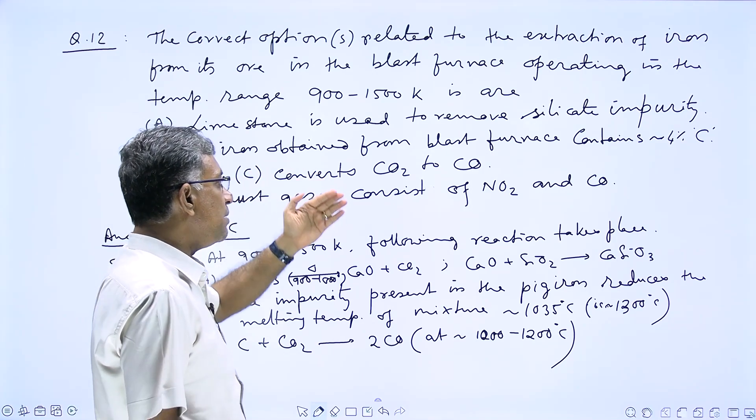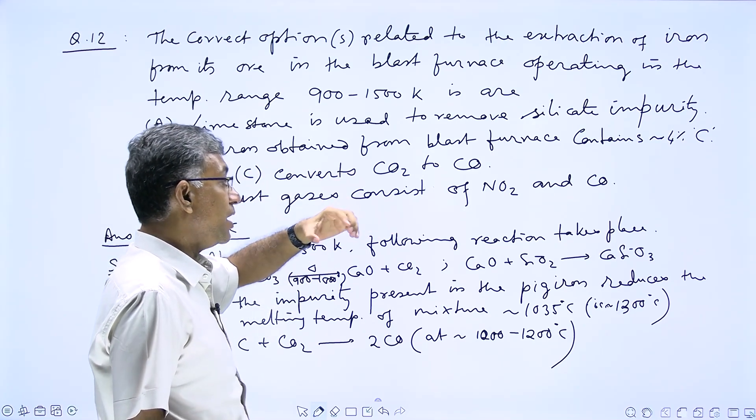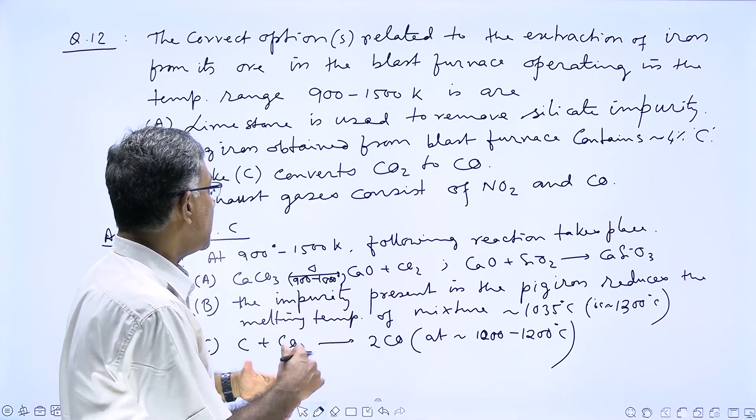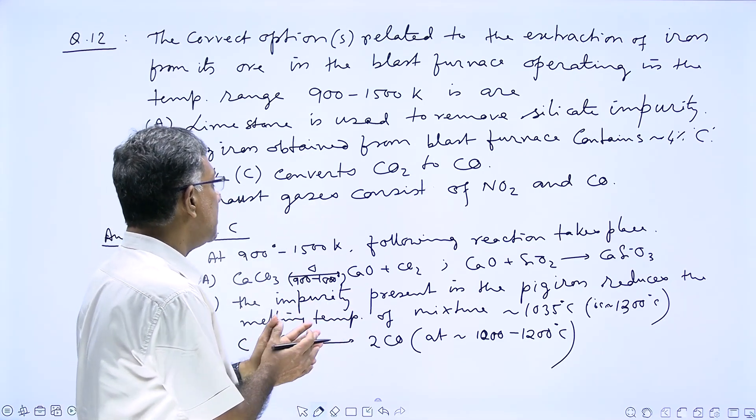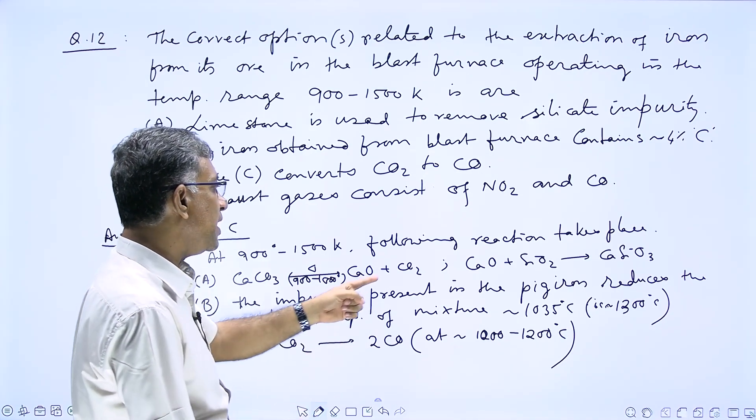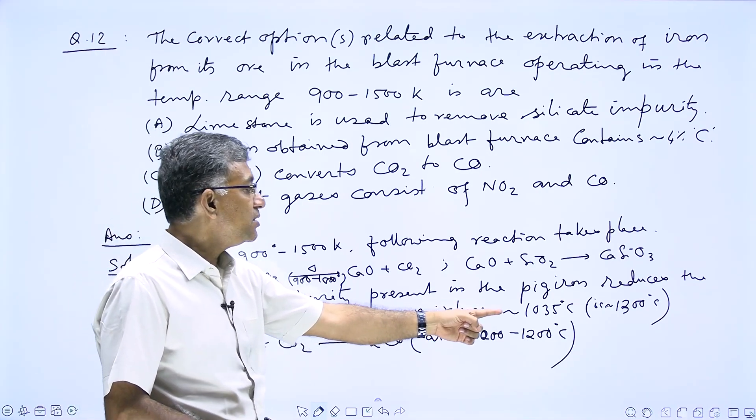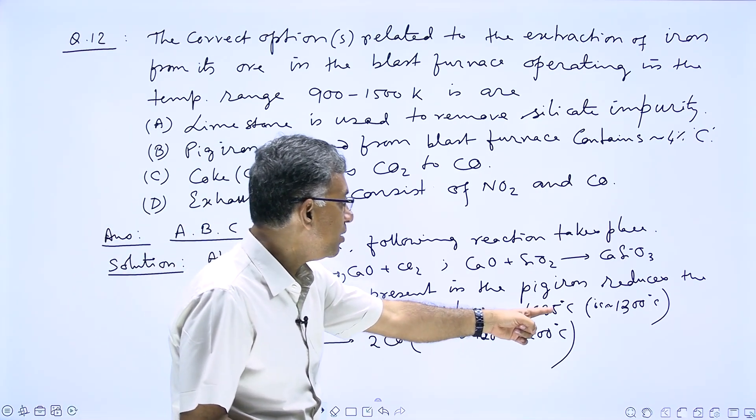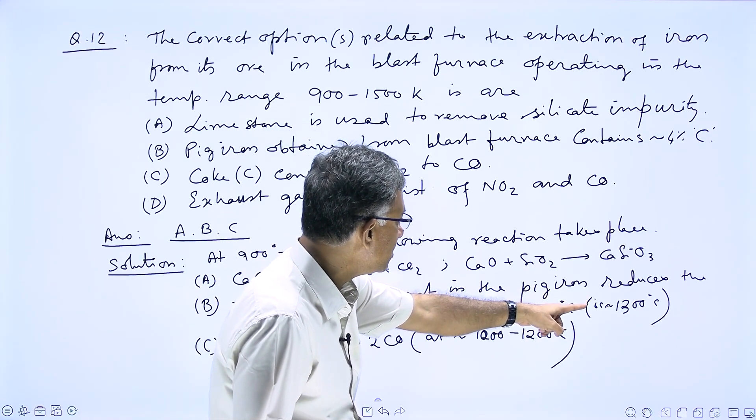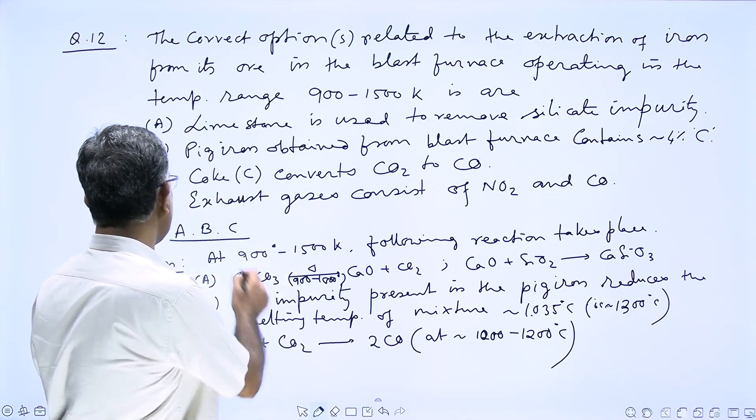Actually the iron melting temperature is approximately 1500 degrees centigrade. But whenever it is associated with carbon, taking around 3 to 4% carbon, it forms pig iron. This impurity present in the pig iron reduces the melting temperature of the mixture to around 1035 degrees centigrade, which is approximately 1300 degrees centigrade. So according to the temperature range, B is also the answer.